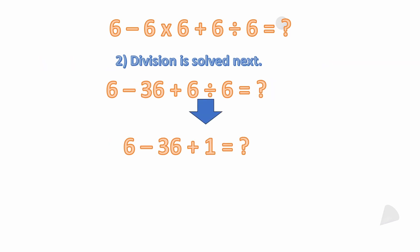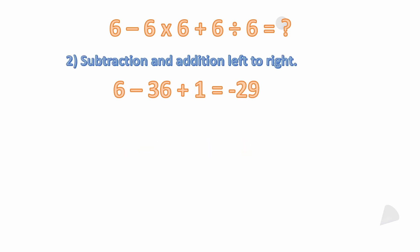The next operation that we have is division. The only reason we did multiplication first is because it was to the left. It was the first thing we ran into. Had the division been the first thing we ran into, we would have solved that. But in this case, we're going to divide 6 divided by 6, which we should all know that that is equal to 1. So now our problem reduces down to 6 minus 36 plus 1. 6 minus 36 is negative 30. Negative 30 plus 1 is negative 29. So the only correct answer here is negative 29.